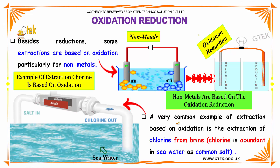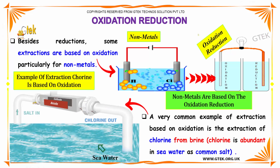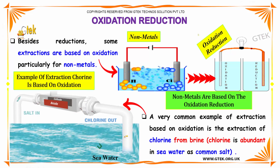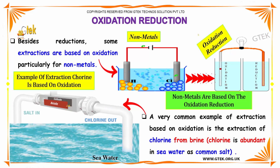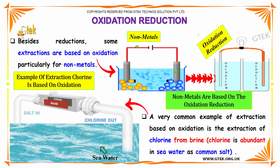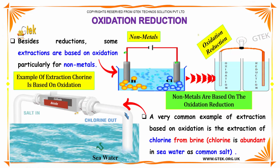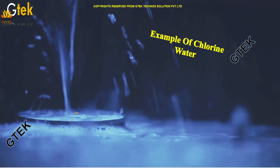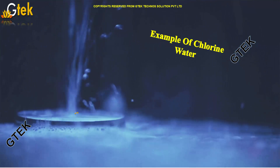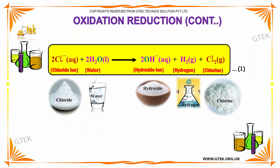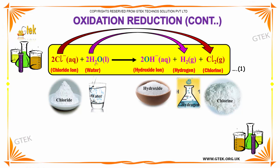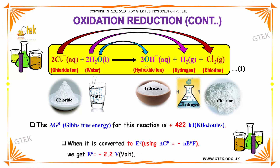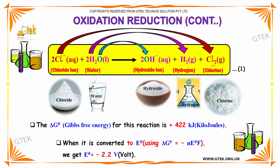A very common example of extraction based on oxidation is the extraction of chlorine from brine. Chlorine is abundant in seawater as common salt. A typical example involves chloride ion mixed with water, which gives you hydroxide ion, hydrogen, and chlorine.